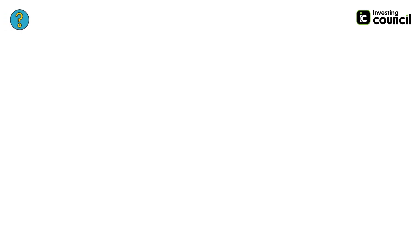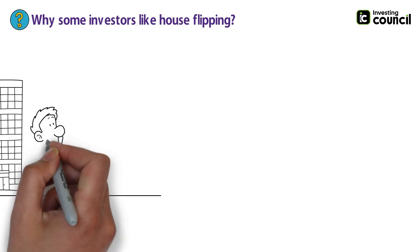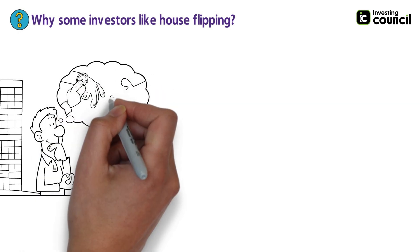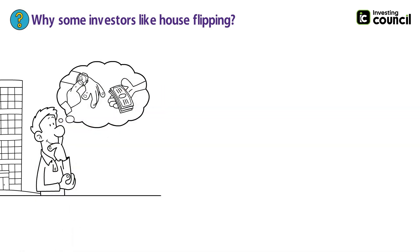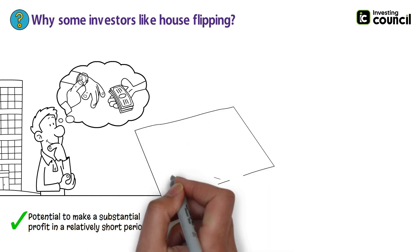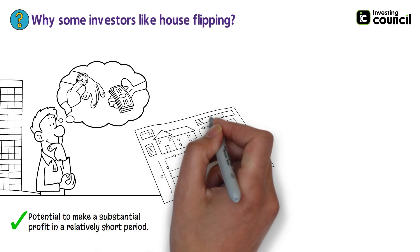Why do some investors choose to flip houses? Investors choose house flipping for several reasons. One of the most significant is the potential to make a substantial profit in a relatively short period. With the right property and market conditions, investors can buy a property at a low price, make necessary improvements, and sell it at a higher price for a profit.